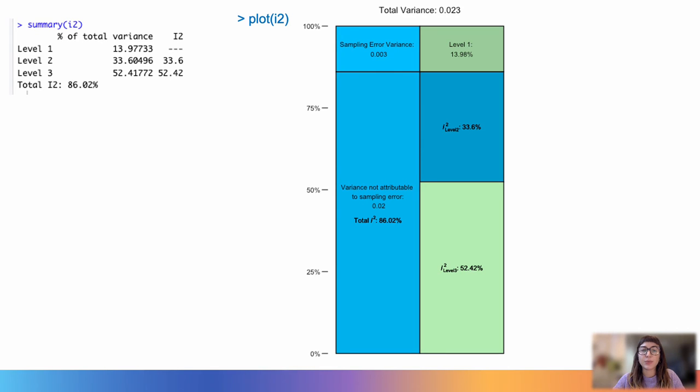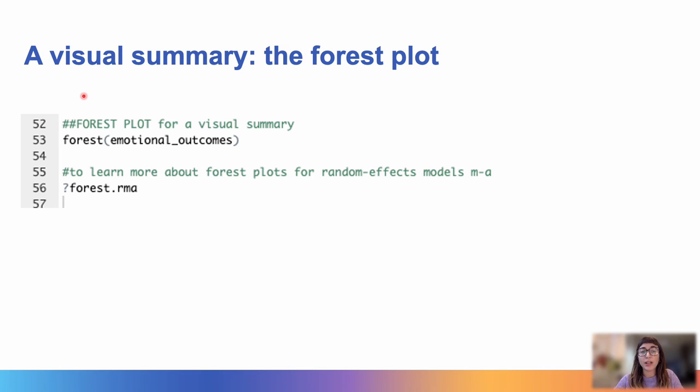We can see the total heterogeneity for our meta-analysis, and also how it is distributed in level 2 and in level 3. It is also interesting to see this visual representation of the heterogeneity. So, here we can use the plot I-squared code, and here we see the variance that is not part of the sampling error. This is the total, and this is how it is split in the two levels, while here is the sampling error variance.